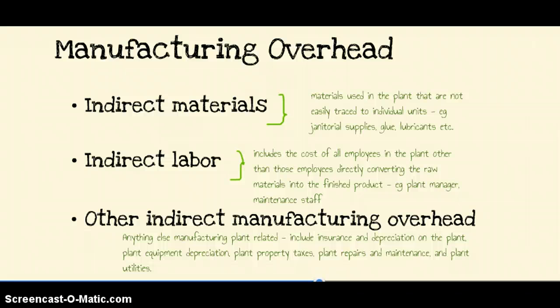The next type of manufacturing overhead is indirect labor — the cost of all employees in the plant other than those directly converting raw materials into the finished product. So this covers all wages other than assembly line workers: the plant manager, maintenance staff, and janitorial staff — all their wages are considered indirect labor.